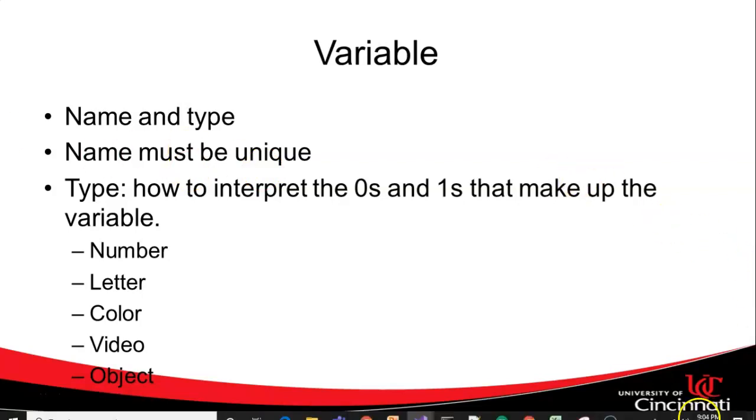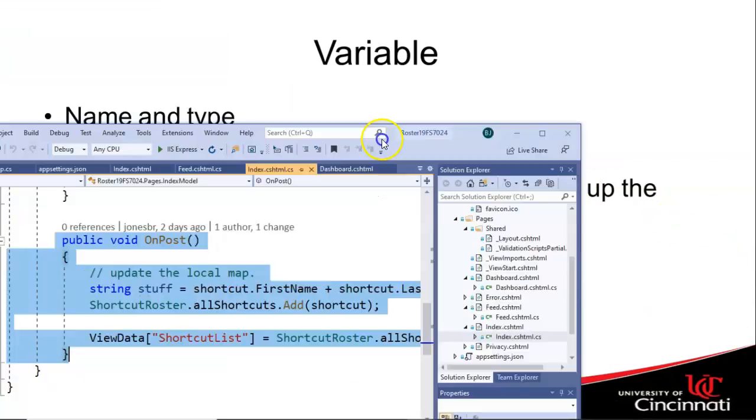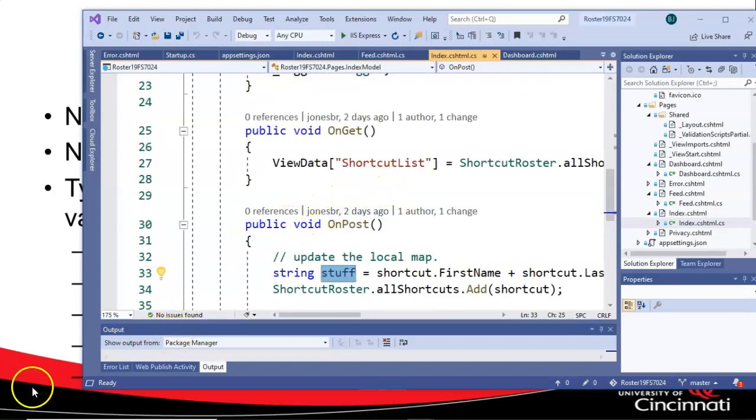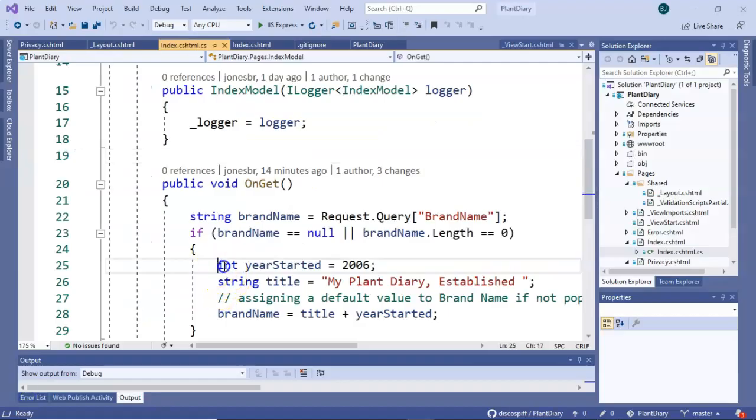So when we take a look at a variable and the declaration of a variable, we'll often see this format where we have the type, in this case it's string, and then we'll have a name that uniquely identifies it. Another example here, we have type int, which is a whole number type, and then a name. And then we have type string, which is essentially character data, and then a name.